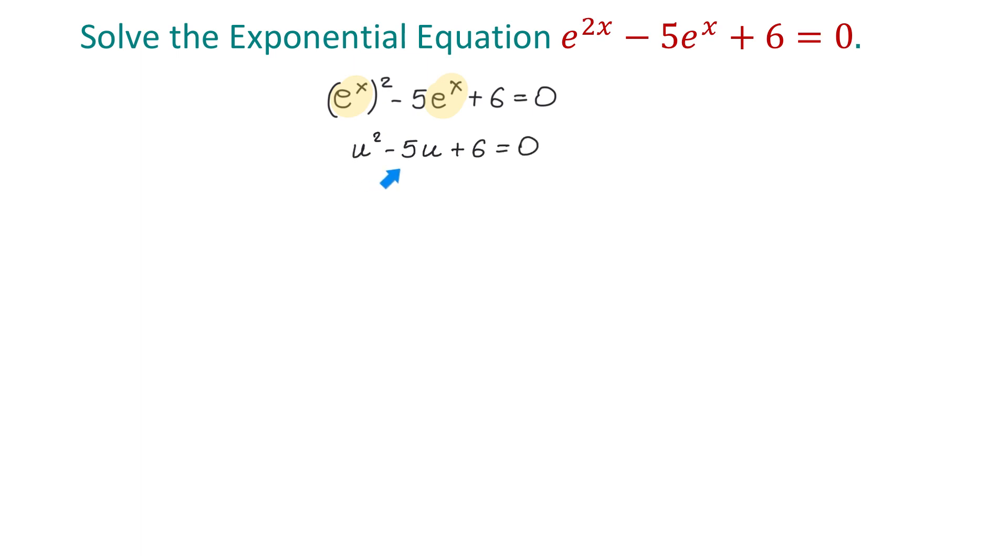This is a quadratic equation and we can solve it for u by using factoring. On the left side, we will have a product of two binomials and each binomial will start with u.